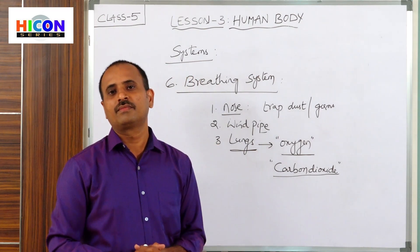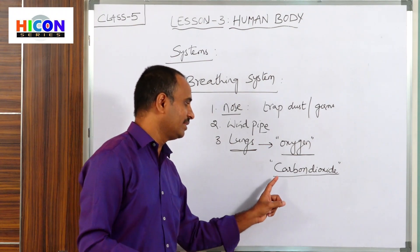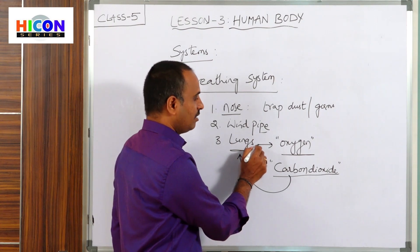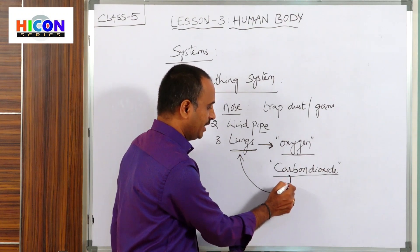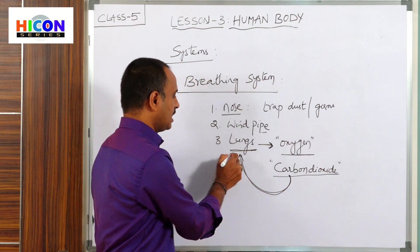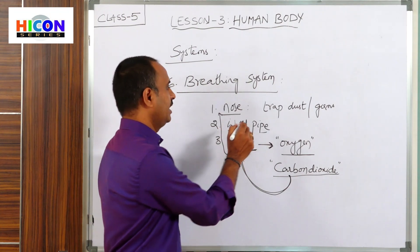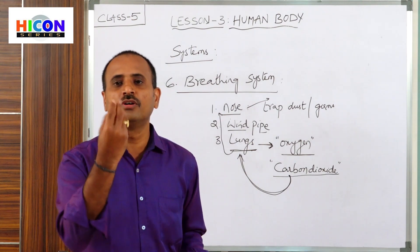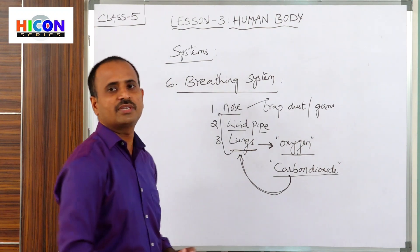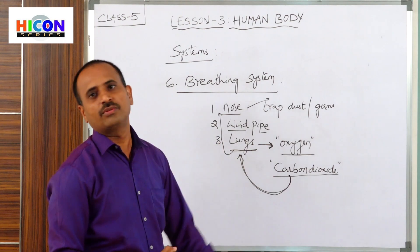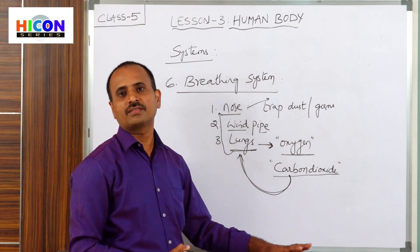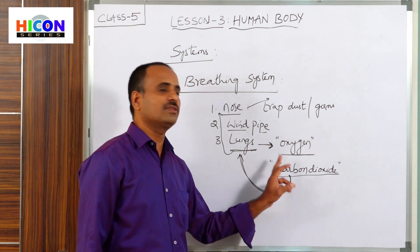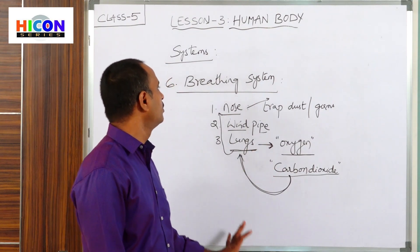Carbon dioxide is released at each cell inside our body during the burning of food using oxygen. This is a waste gas that is not required by the human body. So the blood carries this carbon dioxide back to the lungs. From the lungs, the carbon dioxide travels through the windpipe to the nose and comes out of the body. We breathe in oxygen and breathe out carbon dioxide.